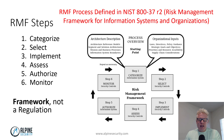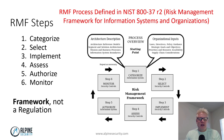Then we have select controls. So we categorize our system, we select the security controls for the system, then we implement those controls, then we assess the controls' effectiveness, then somebody makes a decision to accept the risk and authorize the system on the network, and then we want to continuously monitor to make sure the controls we chose are actually effective. So that's the six steps, and we'll go into a little more detail on each of them.